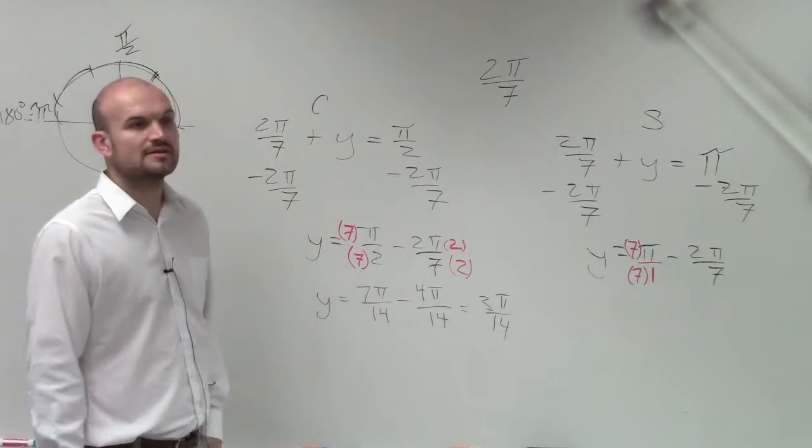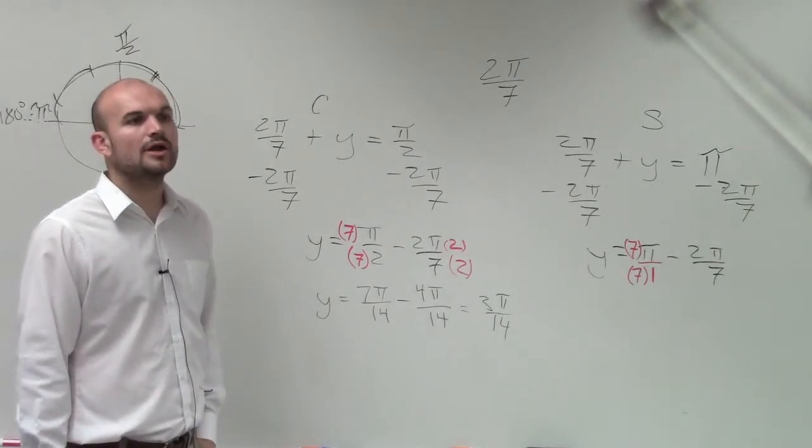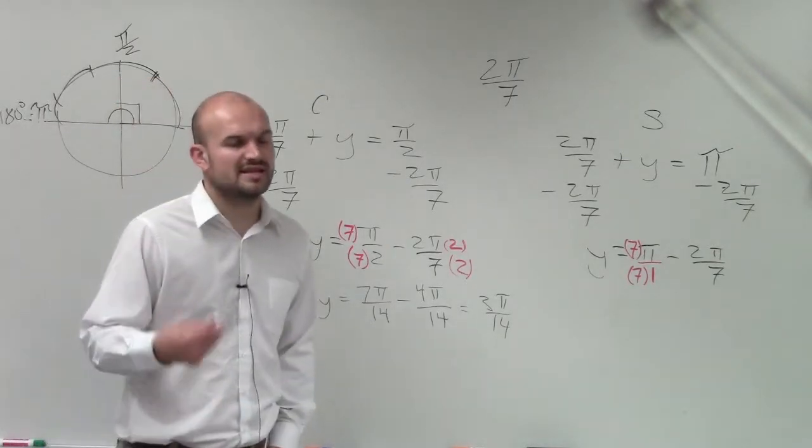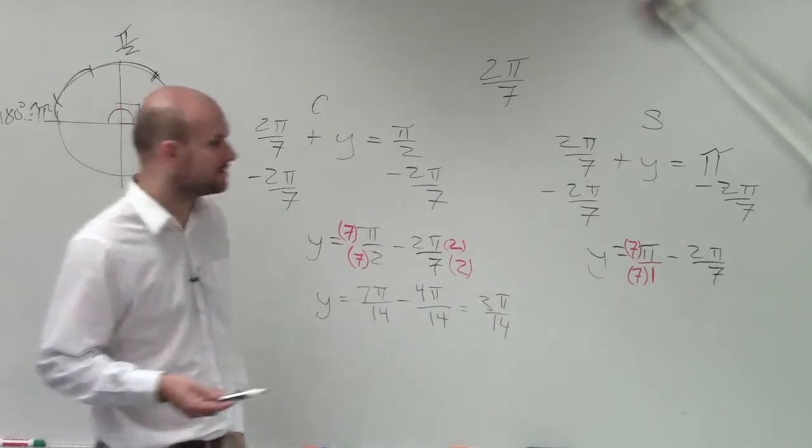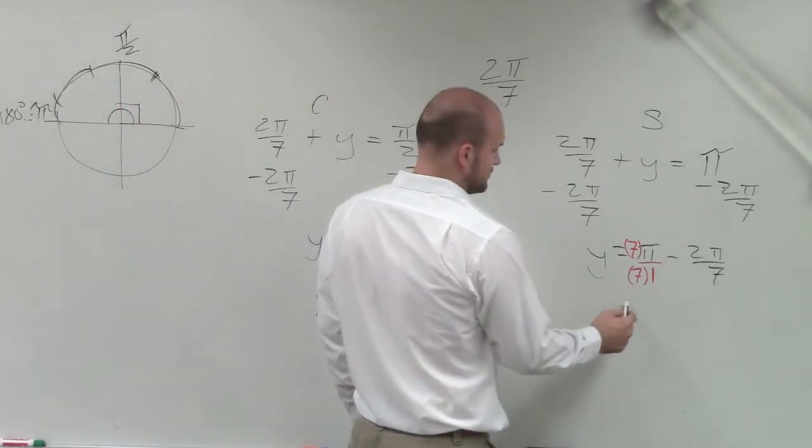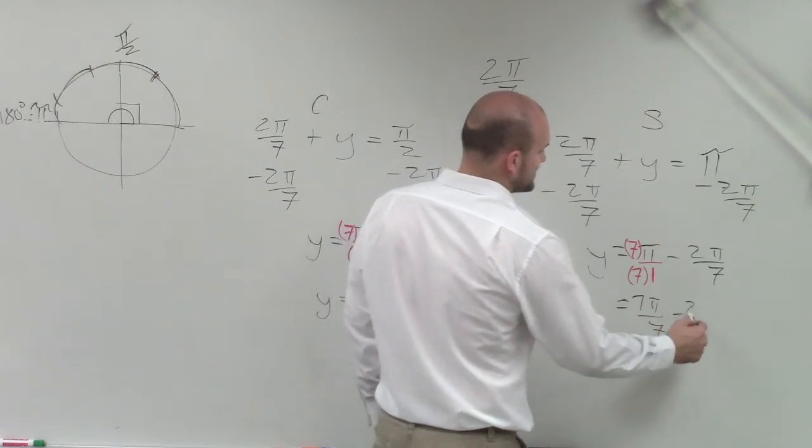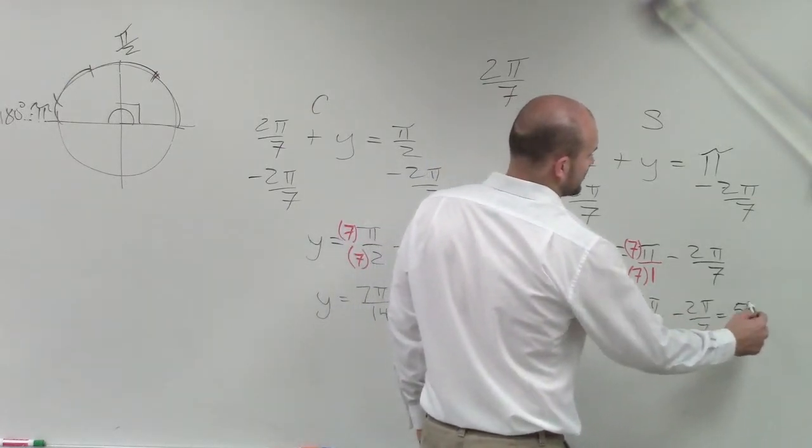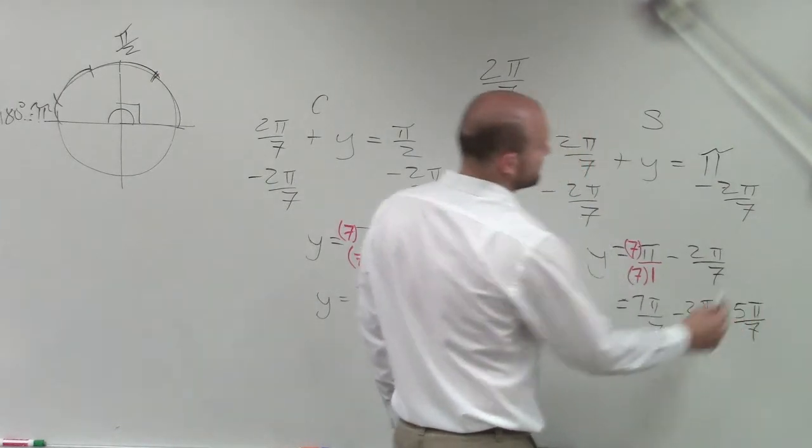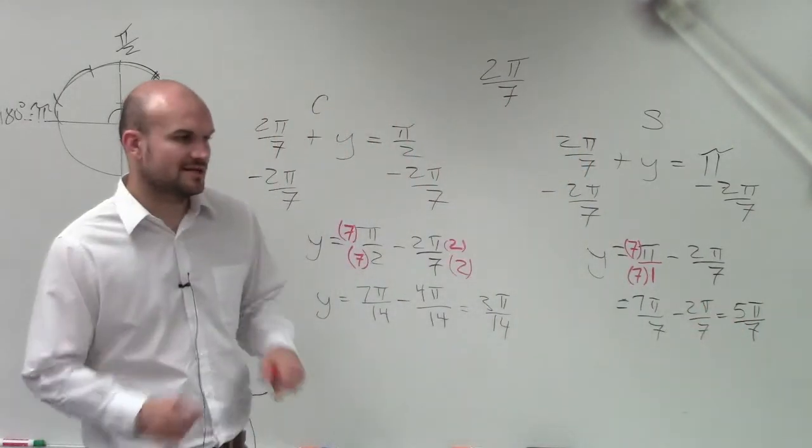5 over 2. No, I said no, I might not have said that correctly. It's 3 pi over 14 was the answer. For over here, you now have 7 pi over 7 minus 2 pi over 7, which equals 5 pi over 7. You write that down, Israel?